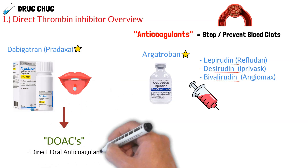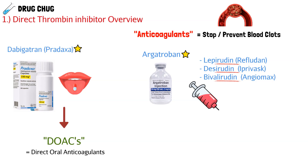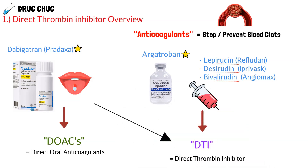Because dabigatran is oral, it's also referred to as a DOAC, or direct oral anticoagulant. This is also true with the factor Xa inhibitors covered in the previous episode. The argatroban, lepirudin, desirudin, and bivalirudin are all infusions. Although they're not oral, we still refer to these as direct thrombin inhibitors because they all work the same way. The only difference is that dabigatran can be taken orally; everything else has to be an infusion.